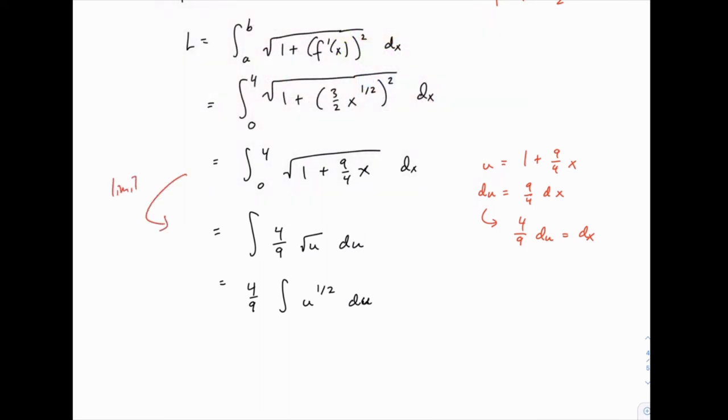The limits of integration: when x equals 0, u equals 1 plus 9 fourths times 0, which would be 1. And when x equals 4, u equals 1 plus 9 fourths times 4, which is 1 plus 9 or 10. So that means our limits of integration here, in terms of u, will be from 1 to 10. And that means when we're done with our integration, we don't actually have to come back into terms of x, we can just plug in the limits as values of u right away.